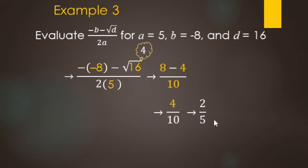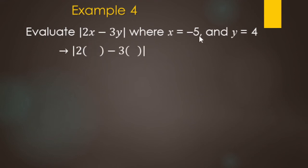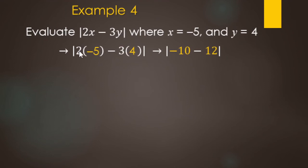We're going to evaluate the absolute value — those straight vertical lines — of 2x minus 3y, where x equals negative 5 and y equals 4. Evaluate means we replace the variables: 2 times negative 5, minus 3 times 4. The absolute value symbols count as grouping symbols in PEMDAS. There are no exponents, and the parentheses here are multiplication symbols. So inside the absolute value: 2 times negative 5 — positive times negative makes negative, 2 times 5 makes 10, so negative 10. Minus 3 times 4: 3 times 4 makes 12.